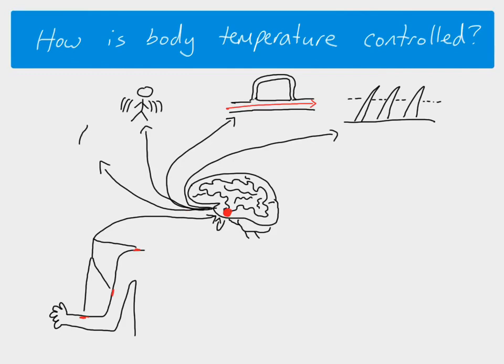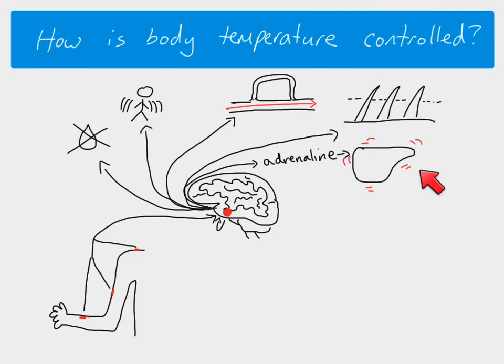Impulses can also be sent to the muscles of the body causing shivering — muscles contracting rapidly generates heat to warm us up. Impulses may also be sent to reduce sweat production. Finally, the hypothalamus can send impulses to the adrenal gland to release the hormone adrenaline, and adrenaline release increases liver metabolism, which increases the amount of heat the liver generates when the metabolic rate is increased.